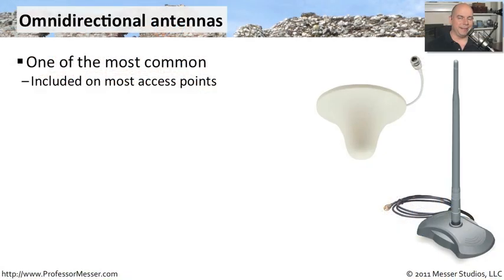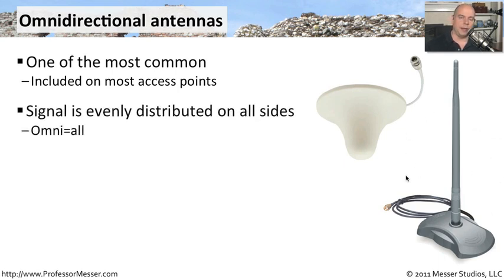There are a number of different antenna types that you might want to use with your access point. One of the most common you'll find is called an omnidirectional antenna. If you've ever purchased an access point and set it up, it probably has an antenna that looks a little bit like this. That's an antenna that takes the signal coming out of that access point and evenly distributes it across all sides of that access point.